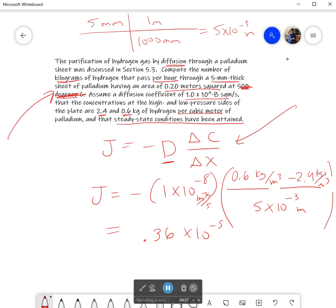And if I do it all correctly, this cancels this and one of these. What I should get in the end is, kilograms per meter squared second. Yes. That is my flux.